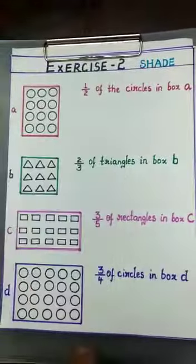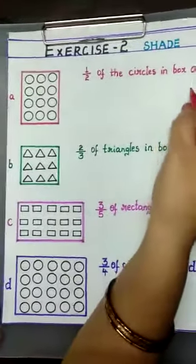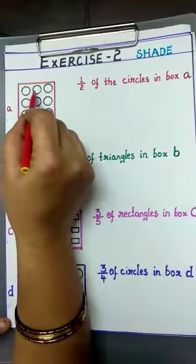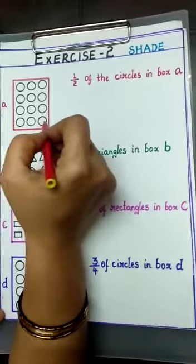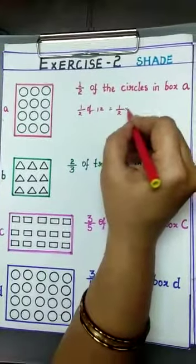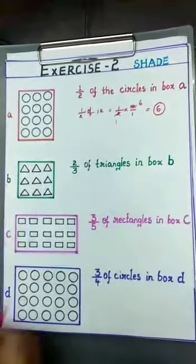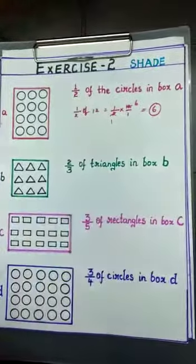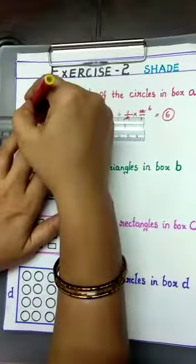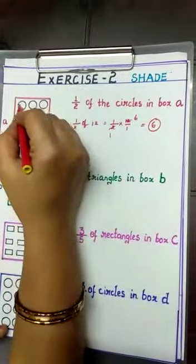Now see another problem from Exercise 2. This is a very important and interesting sum — you have to shade the pictures according to the problem. First one: half of the circles in Box A. In Box A we have 12 circles. Half of 12 means 1/2 into 12/1. Simplify: 2 ones and 2 sixes are 12, giving 6. So shade 6 circles, dividing the box into 2 equal parts of 6 circles each.